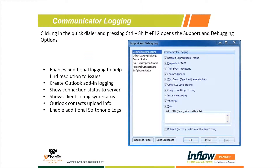We get a lot of communicator issues, and one thing I wanted to cover is the advanced logging and debugging capabilities of the ShoreTel Communicator. Anytime you're in Communicator, click into the field that says 'type a name or number' — the quick dialer — and hold Shift+Ctrl+F12. It will launch the support and debugging panel, where you can turn on additional logging, look at different statuses, and so on.